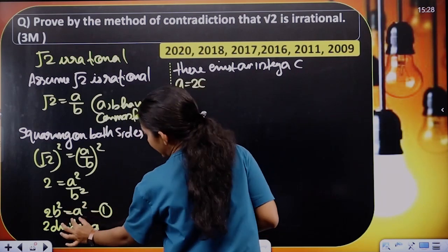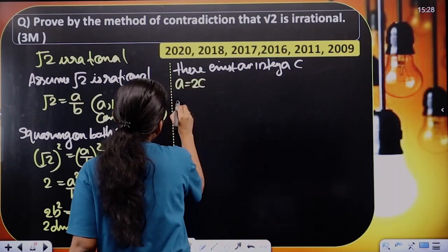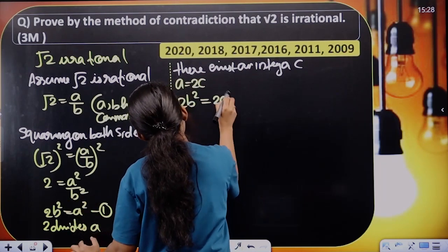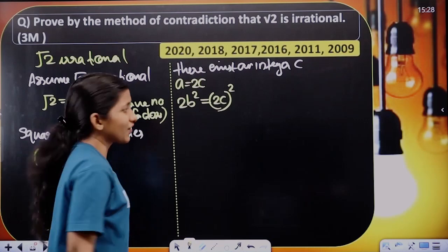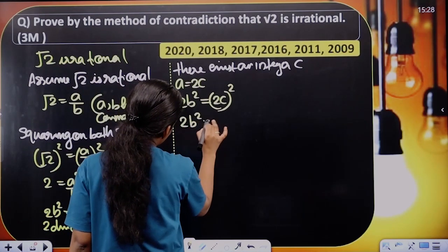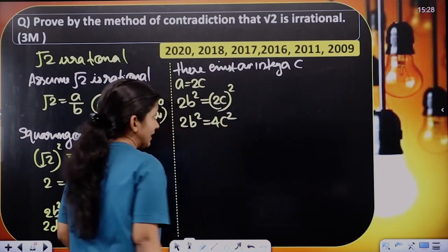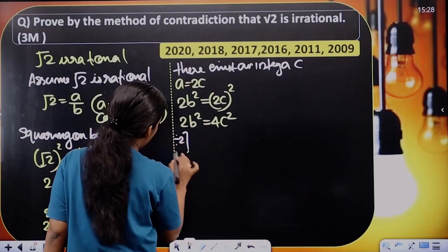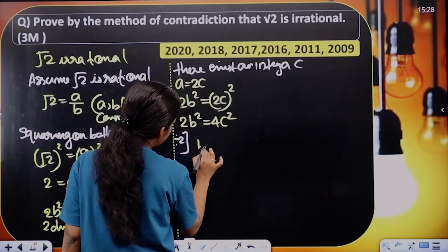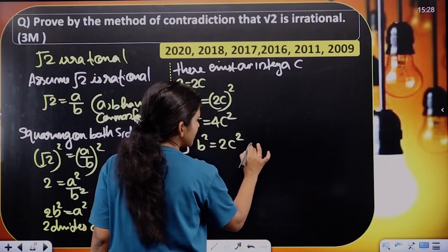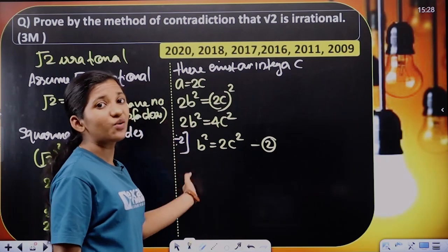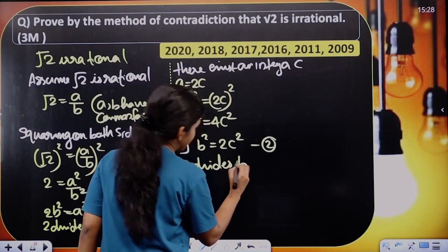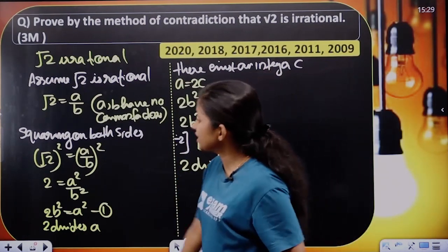Substituting A squared equals 2C squared into equation 1: 2B squared equals 2 times 2C squared, which gives 4C squared. Dividing both sides by 2, next step gives B squared equals 2C squared. So 2 divides B.